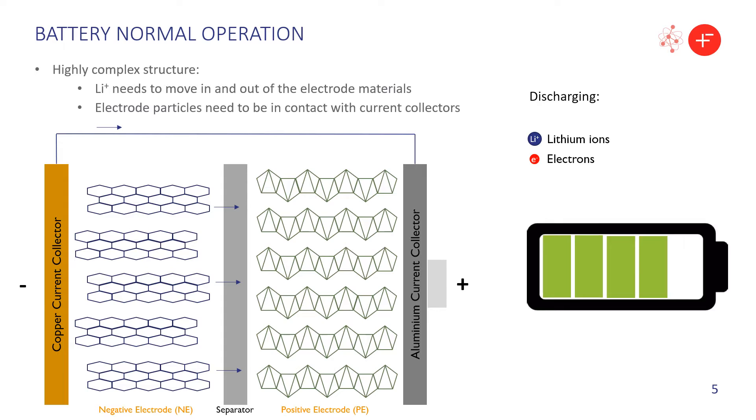A healthy or new battery has a highly complex structure, the integrity of which is important for it to perform well. The electrode materials have to be porous to allow lithium ions to move in and out quickly. The electrode particles have to be electrically connected to the current collectors, and the separator must enable ion transmission, but still electrically separate the positive and negative electrodes to prevent a short circuit. This schematic shows how it works when the battery is discharged. The lithium ions move from the negative electrode to the positive electrode, while the electrons flow in the same direction in the external circuit.